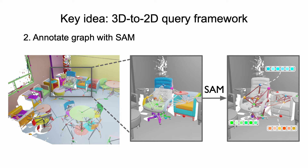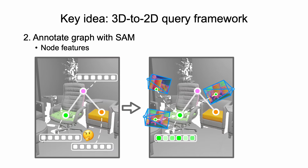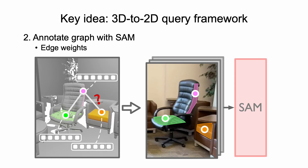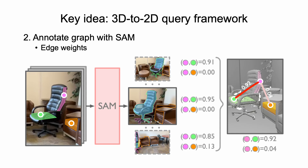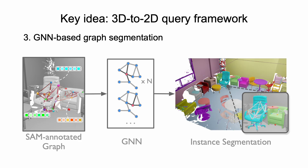We annotate the node features and edge weights of the graph with SAM. Specifically, the node features are obtained by aggregating multi-view image features, and the edge weights are obtained by projecting graph nodes onto multiple views, using the prompt mechanism of SAM to predict multi-view masks and calculating the intersection of corresponding masks. Finally, we use a graph neural network to regress the edge affinity for the graph partition.